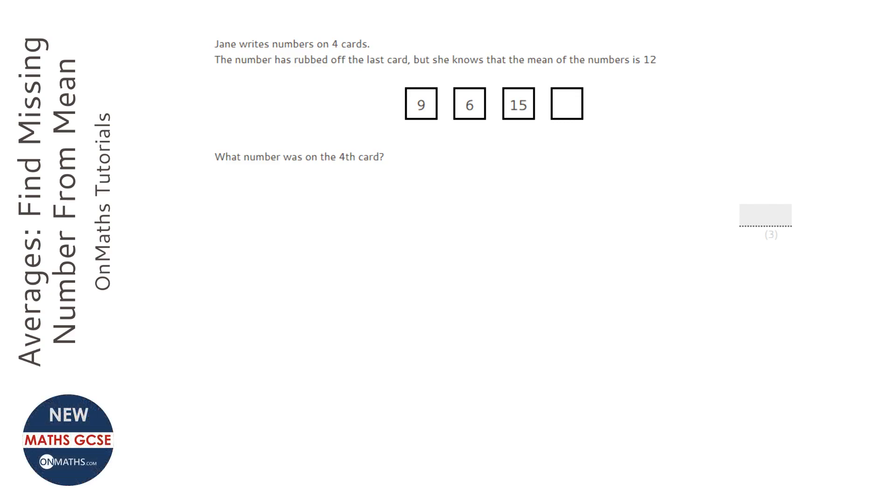So first thing for this question is think about how you would work out the mean. You'd work out the mean by adding these numbers together and then getting the answer and dividing by the amount of numbers we've got, which is four. And we know that equals 12.